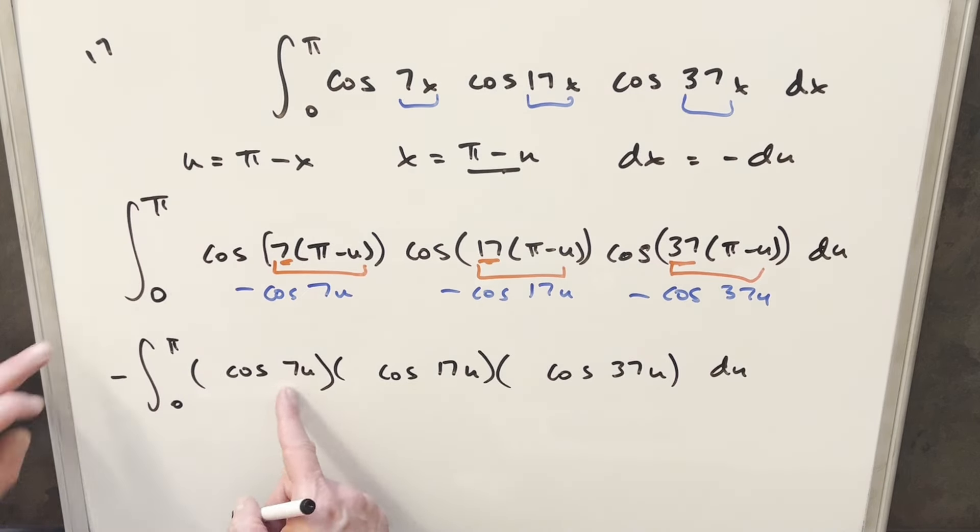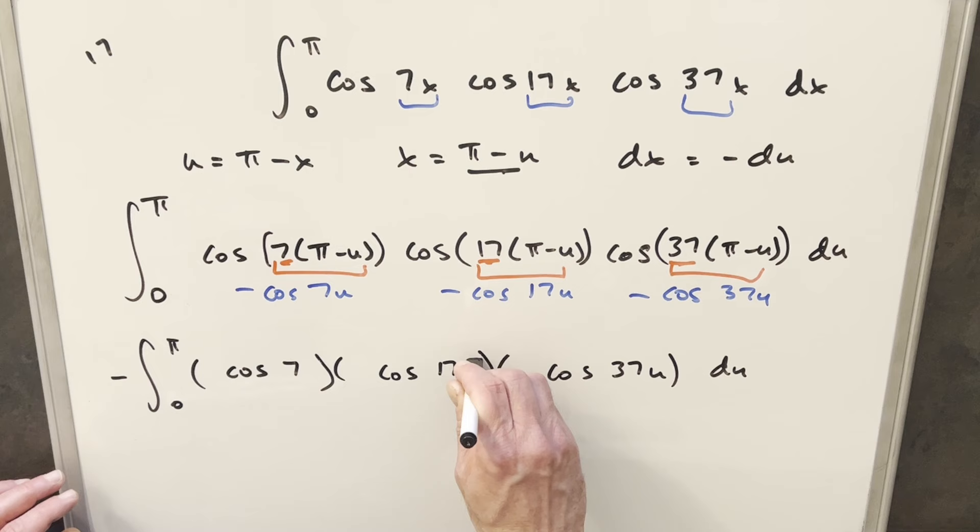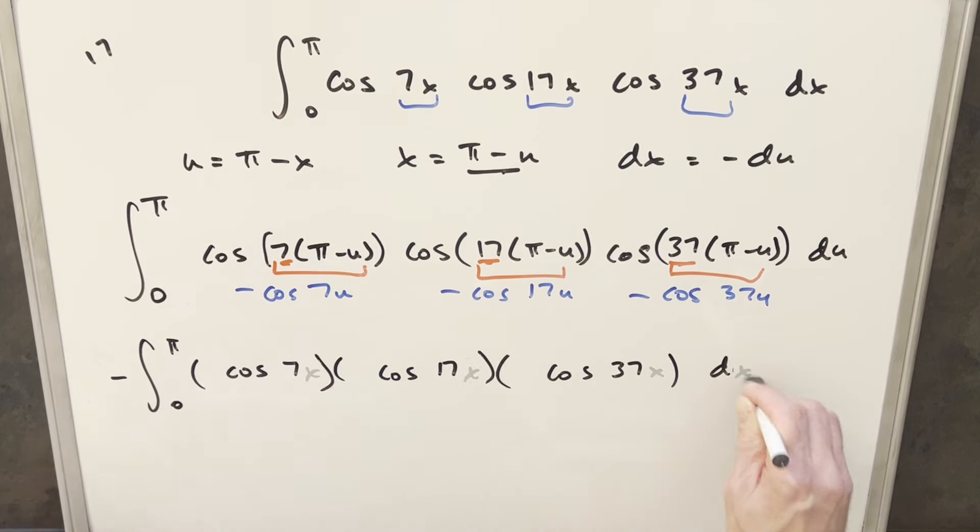But now just one more step before I finish this off. I'm going to do a variable change on this because what I'm trying to do is I'm going to compare it back to our original integral. So let's get everything back into x. Definite integral, I can change the variable. That's no problem. So I'm going to change all these u's to x's.